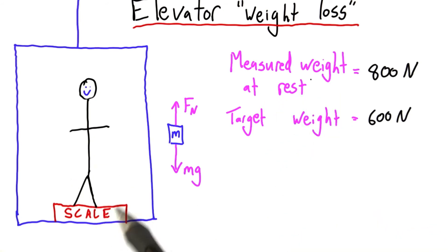This man finds that when he's at rest in the elevator, the scale says 800 newtons. He wants the scale to say 600 newtons.